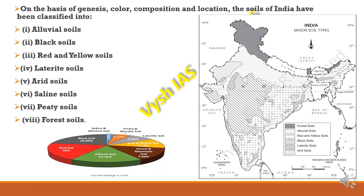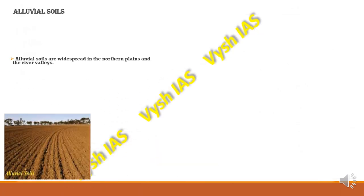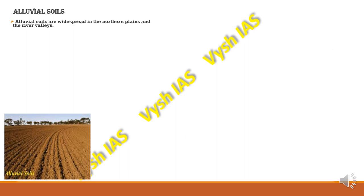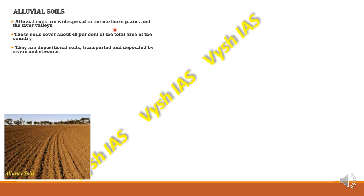Starting with alluvial soils — these are the most widespread soils found in the country, especially in the northern plains and river valleys. They cover up to 40% of the total area of India. They are mainly found in the northern plains because of the extensive drainage system and many rivers flowing through those plains, making them very fertile and useful for agriculture.